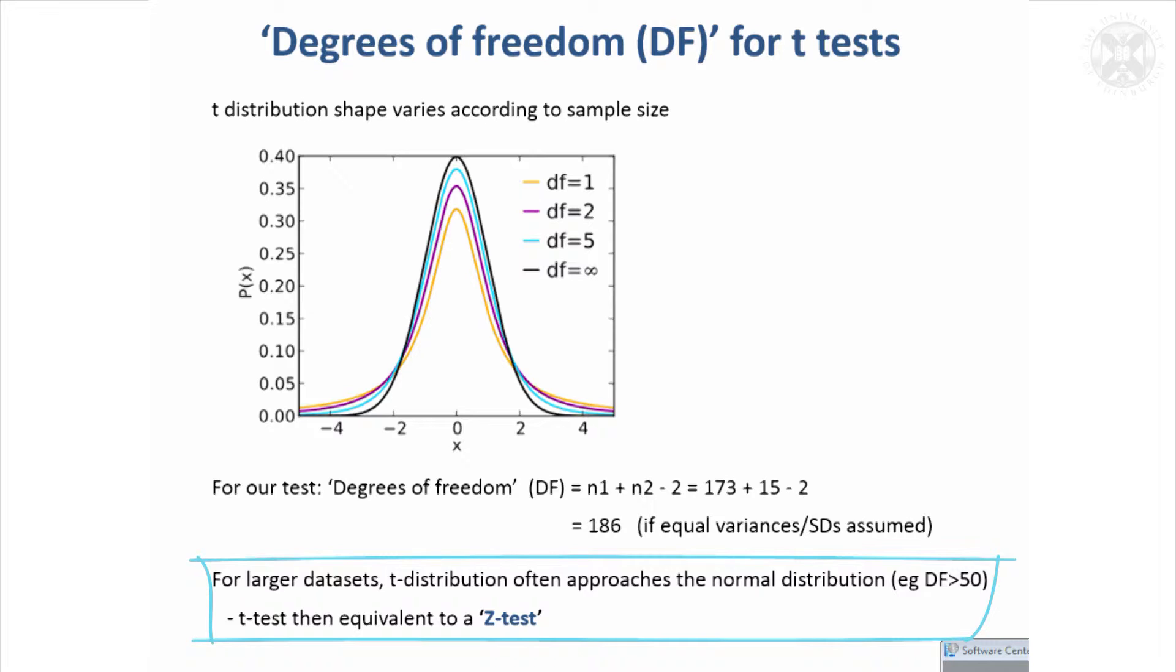The T distribution is just a slight variation from the normal distribution. If you ever come across things called Z tests in the literature, that's basically a T test with infinite degrees of freedom. The Z test is based on the normal distribution.